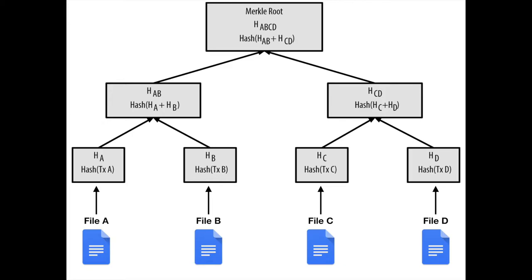For example, if we make a minor change to document one, Hash A will be different, which causes Hash AB to be different, which causes Hash ABCD - our Merkle root - to be different. So to verify the authenticity of those four documents at some point later, we use the documents to create a Merkle tree, take that Merkle root and include it in a Decred transaction so that our Merkle root is permanently stamped on the Decred blockchain. To verify none of the documents have been altered, we create a new Merkle tree and compare that Merkle root with the one embedded on the blockchain. If both Merkle roots are the same, we can confidently say none of the four documents have been altered. If even a single letter has been changed, the Merkle roots will not match.